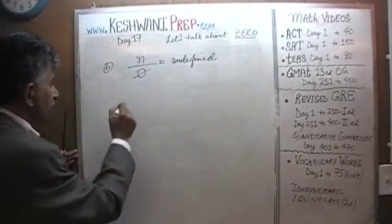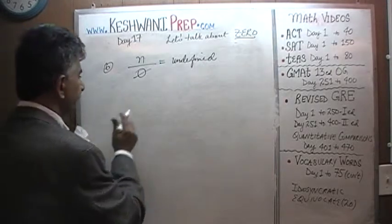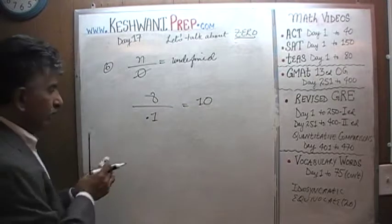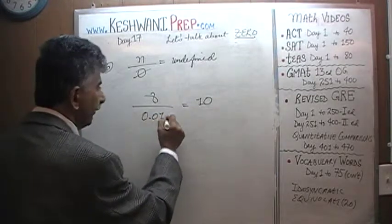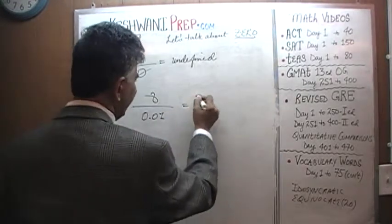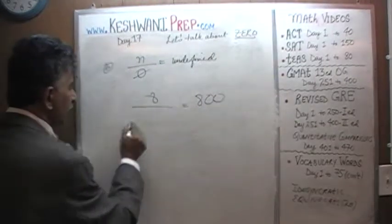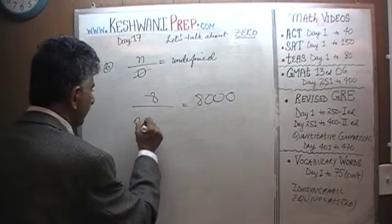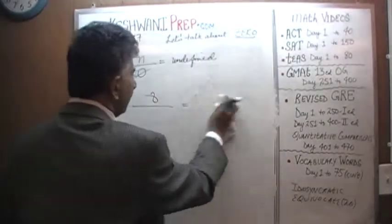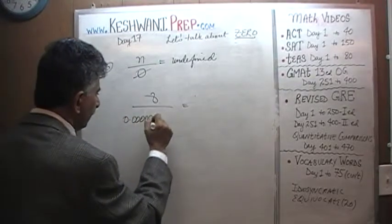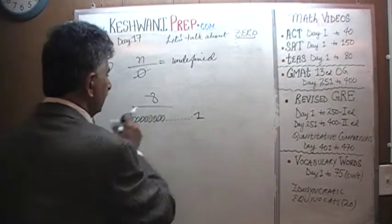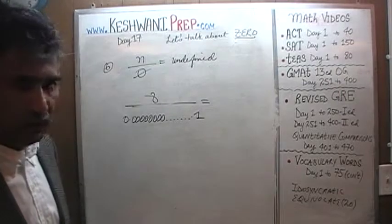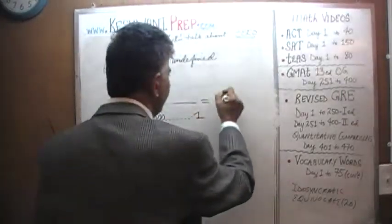For example, take eight. Eight divided by one is eight. If we divide by 0.1, it becomes 80. Divide by 0.01 and it becomes 800. Divide by 0.001 and it becomes 8,000. Divide by 0.0001 and it becomes 80,000. Divide by 0.000001 and it becomes even larger. As the denominator gets smaller and smaller, approaching zero, this quantity keeps growing.